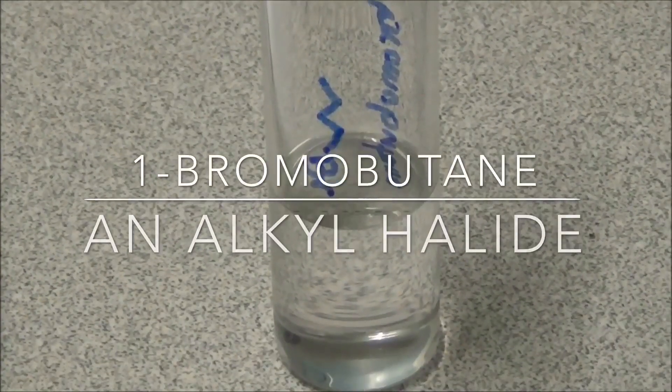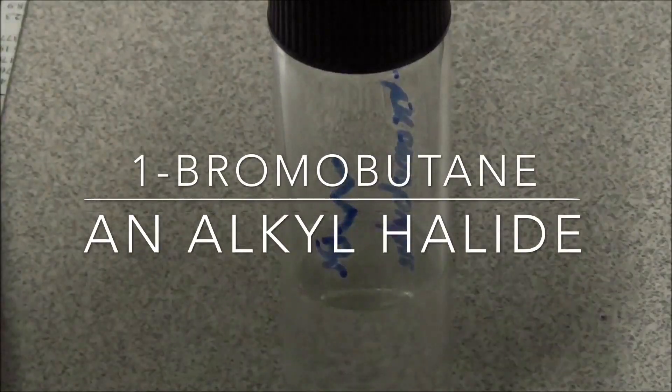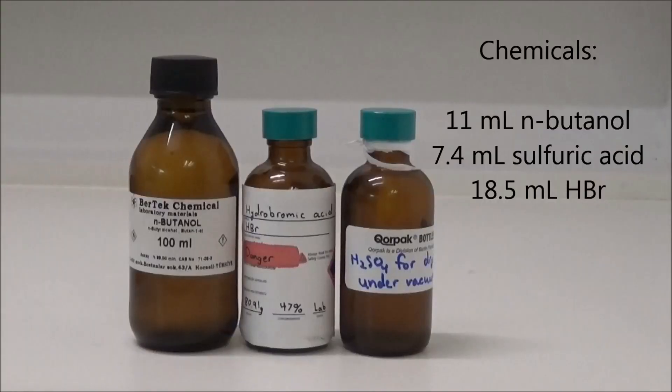Hello everyone and welcome back to the lab. In this video I'll be preparing 1-bromobutane. I will use 11 milliliters of n-butanol, 7.4 milliliters of concentrated sulfuric acid, and 17.5 milliliters of concentrated hydrobromic acid.